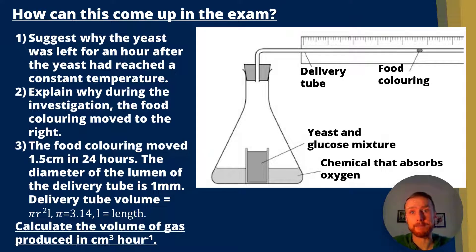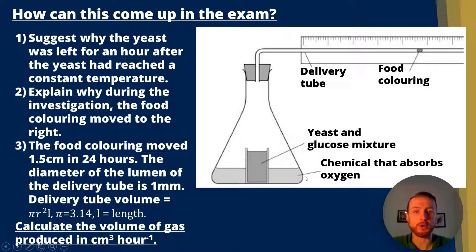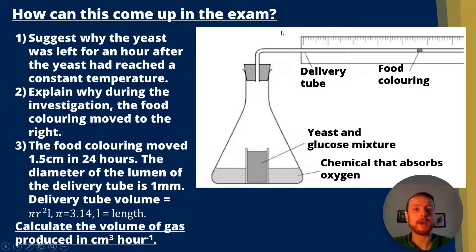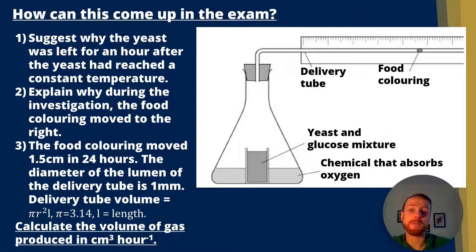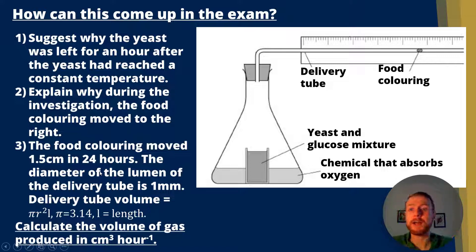Now let's look at how this can come up in the exam — pause here and have a go at these questions. We have yeast and glucose in a conical flask, a chemical that absorbs oxygen separate from the yeast and glucose, a delivery tube and bung making it airtight, and food colouring with a scale to measure how far the droplet moves. Question one: suggest why the yeast was left for an hour after reaching a constant temperature. Question two: explain why the food colouring moved towards the right. Question three: the food colouring moved 1.5 centimetres in 24 hours; the diameter of the lumen is one millimetre — calculate the volume of gas produced in centimetres cubed per hour.